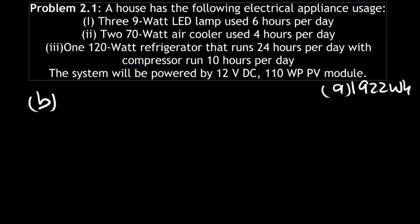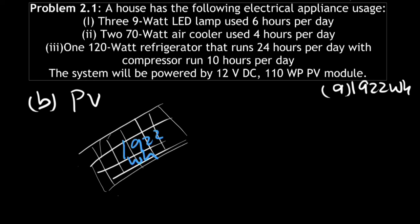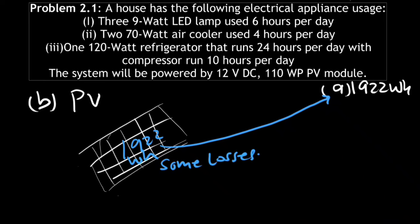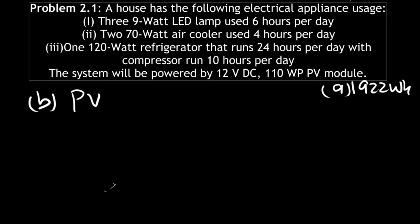In the second step we will find the total watt hours needed from the PV modules. When you have a solar panel like this and you tell the solar panel that you need 1922 watt hours, the solar panel will not give you exactly 1922 watt hours because it has some losses. In general, the solar panel will have a loss of 30 percent.